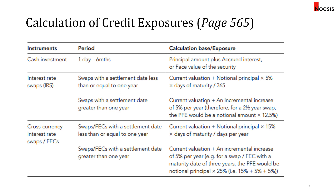For swaps with a settlement date greater than one year, you take the current valuation plus an incremental increase of five percent per year. For the first year we used five percent times days of maturity over 365, then add another five percent for each additional year. For example, a swap with two and a half years remaining tenor has an exposure of notional amount times twelve point five percent — which is five percent times two point five.